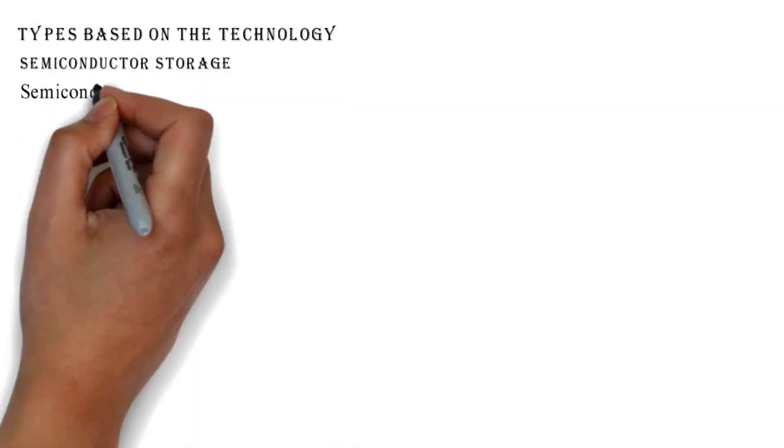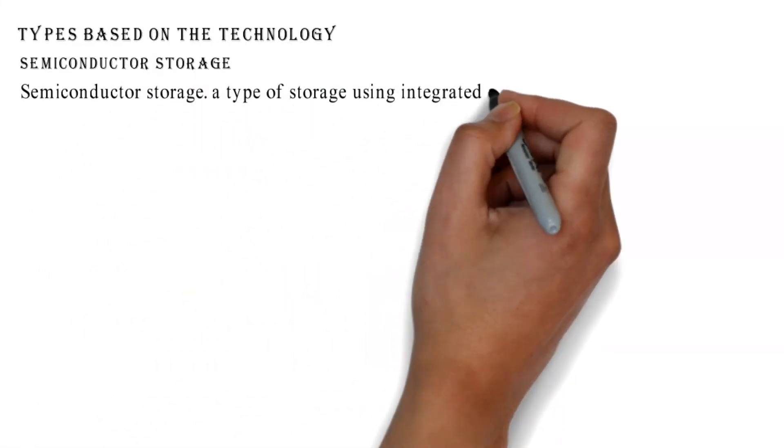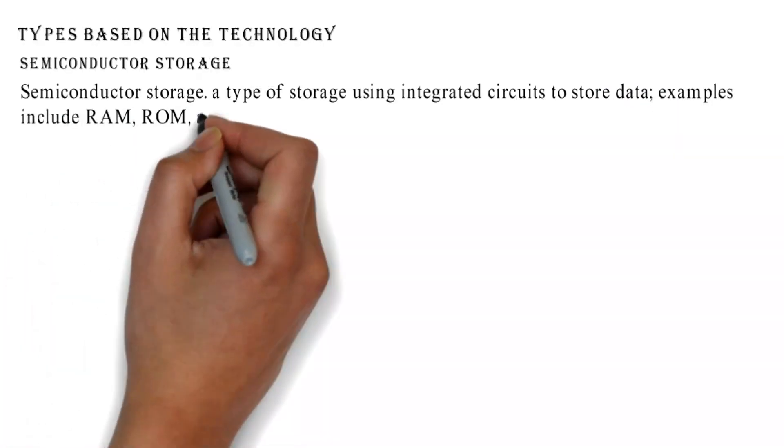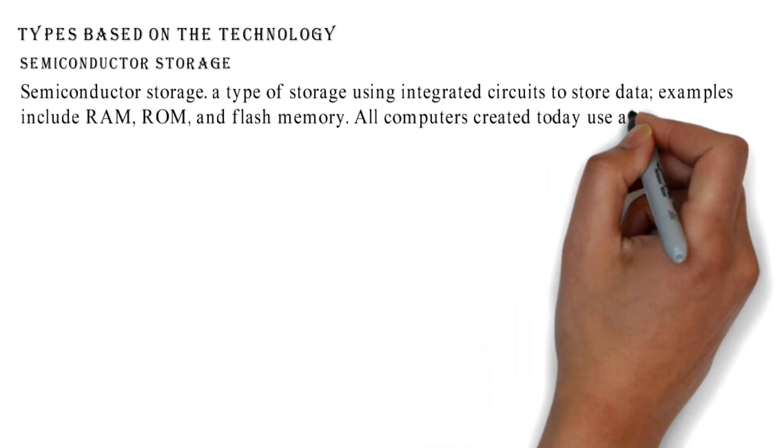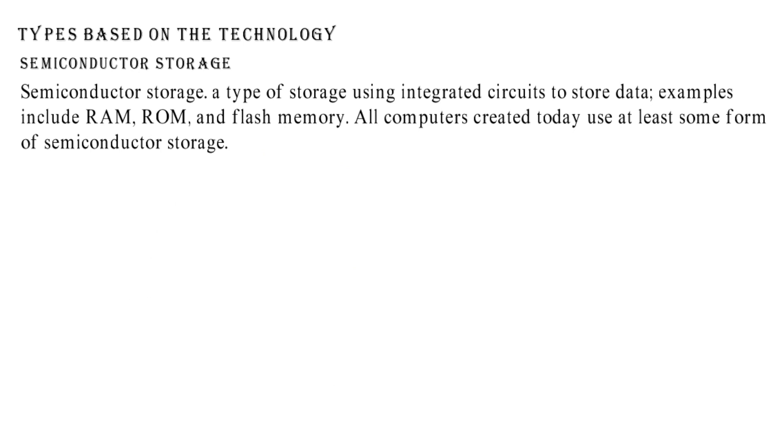Types based on the technology: Semiconductor storage. A type of storage using integrated circuits to store data, examples include RAM, ROM, and flash memory. All computers created today use at least some form of semiconductor storage.